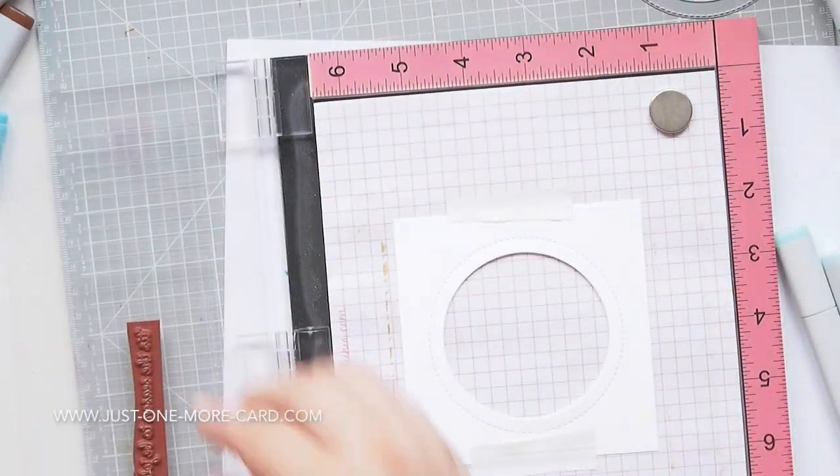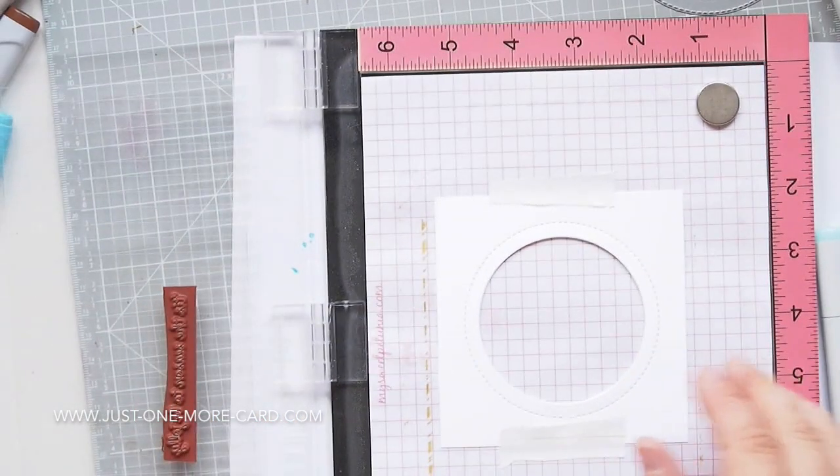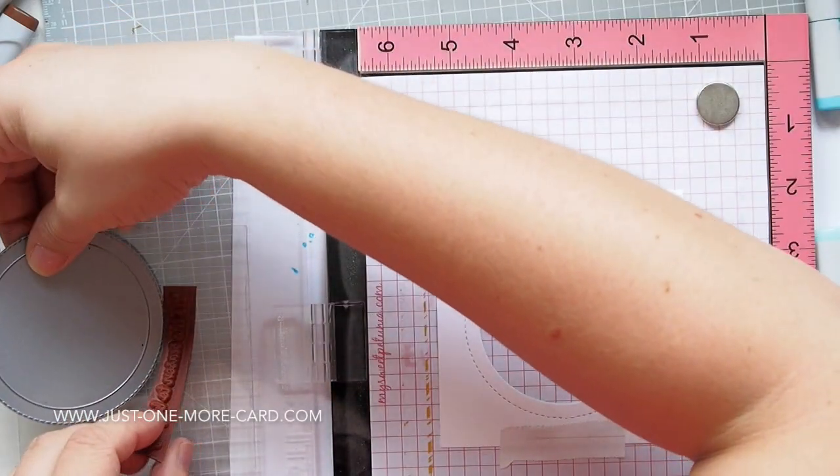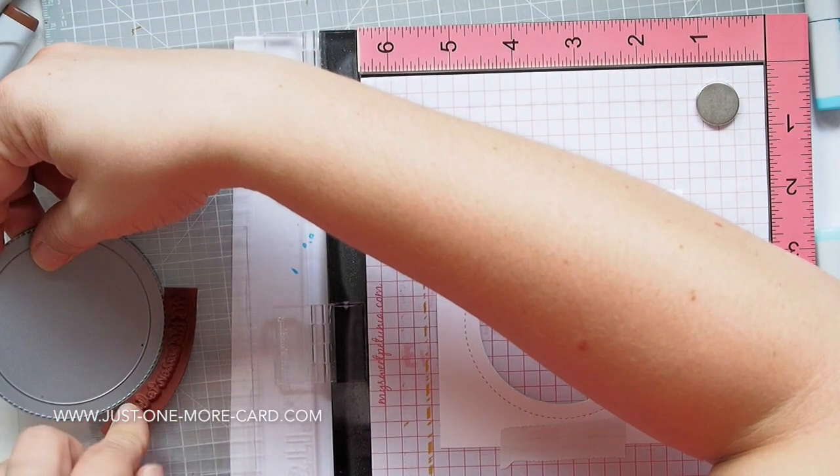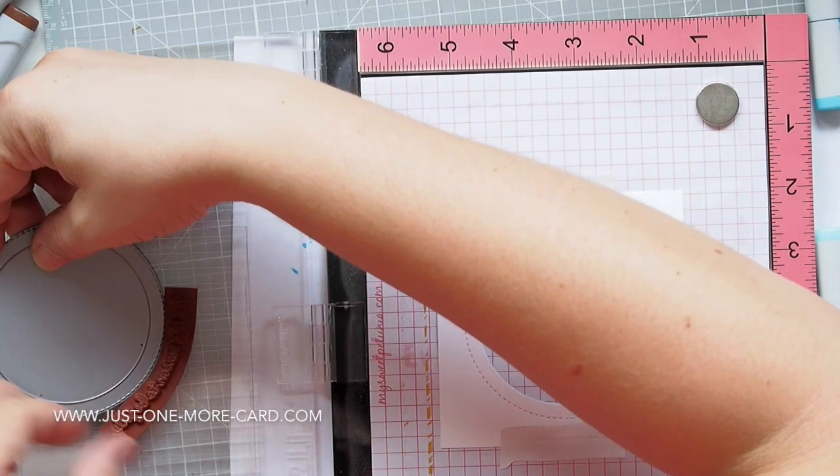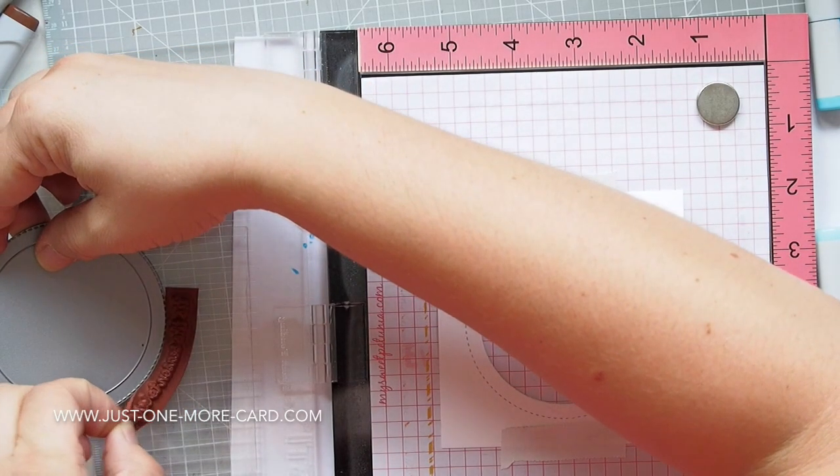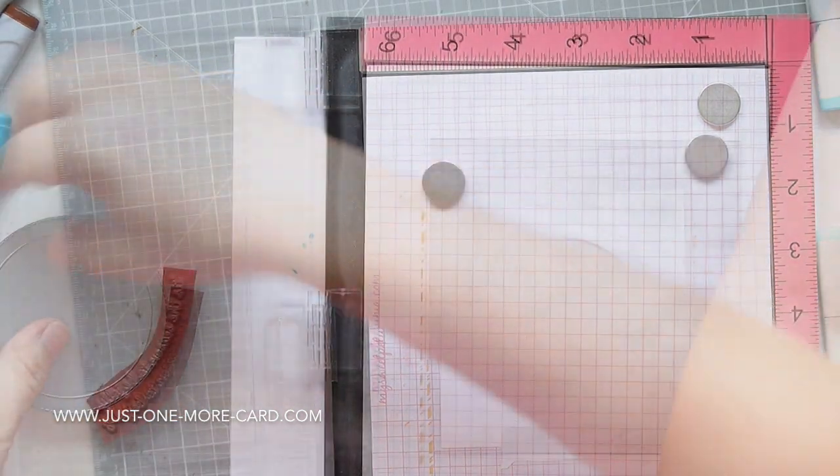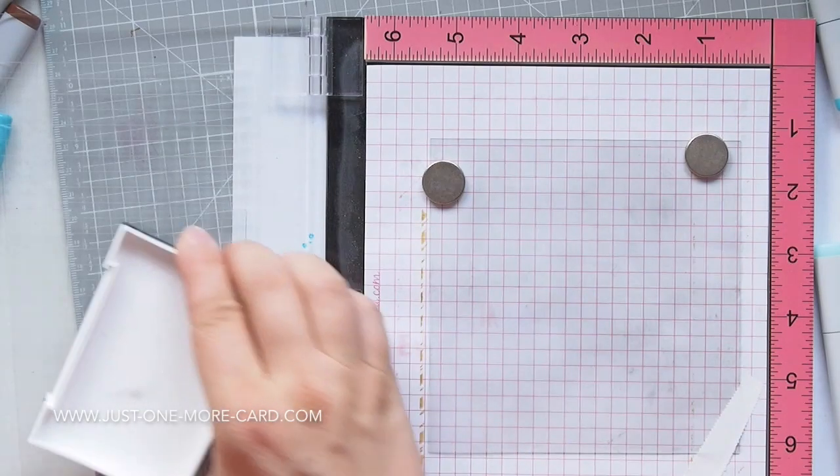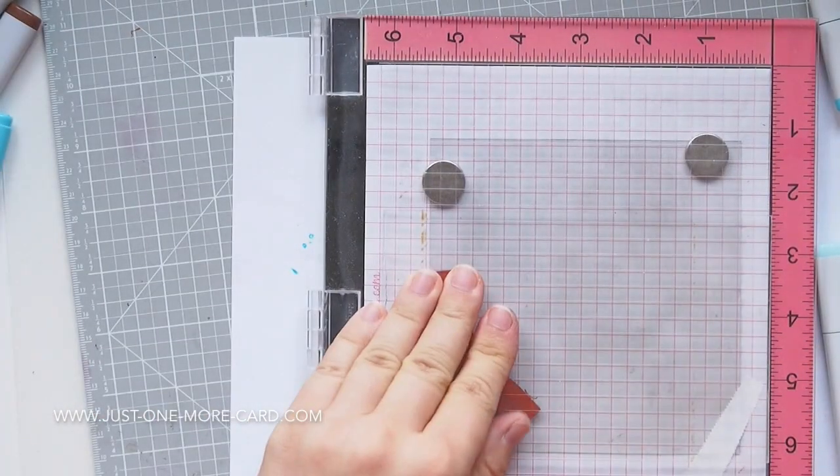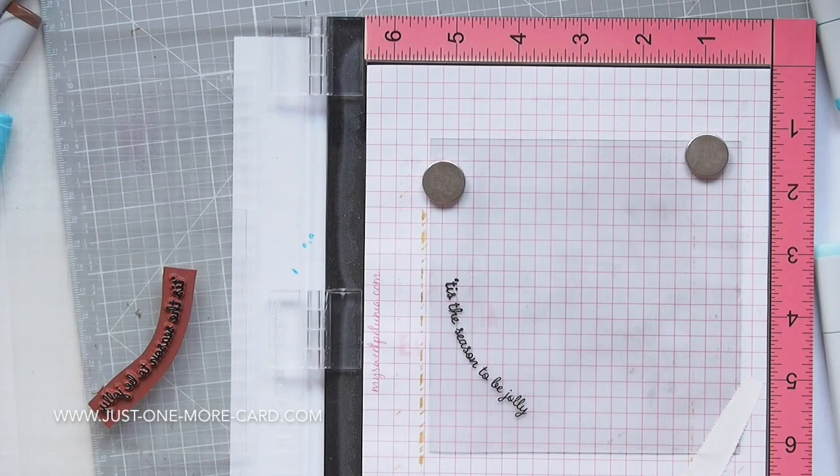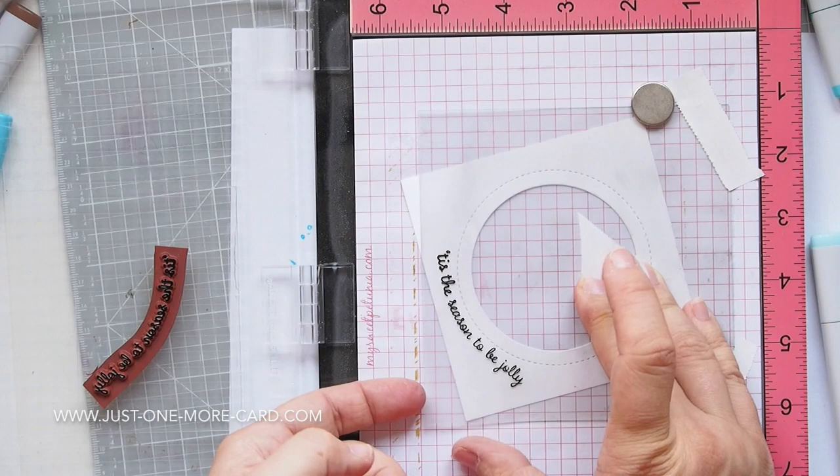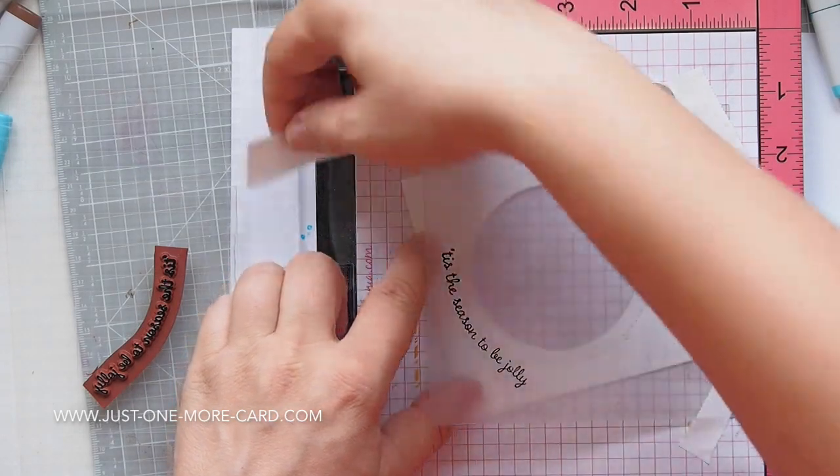Of course, I had to add a sentiment, so I picked up the sentiment here. I have a piece of cling vinyl temporarily adhered to the door of the misty. On the cling vinyl is the tack and peel, and the tack and peel holds the red rubber stamp. I'll have a tutorial for that on my channel. Then I just bend the sentiment so it would go around the opening, stamped it onto the acrylic, and slid my paper underneath the acrylic to make sure I can position it correctly.